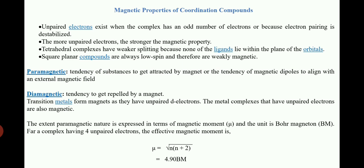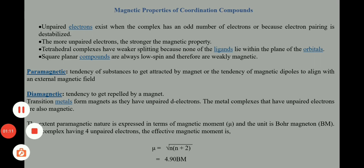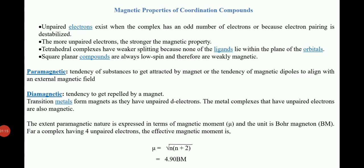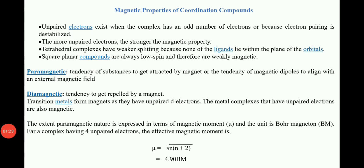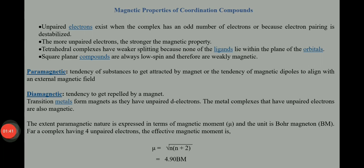Now the question is: on what basis can we predict the magnetic properties of a coordination compound? Let us think about the electron. An electron is a charged particle. As we know, a charged particle can behave like a magnet. The electron can spin around its own axis, and due to its spin it generates charge around it, meaning every charged particle can behave like a magnet — so the electron possesses some magnetic property.